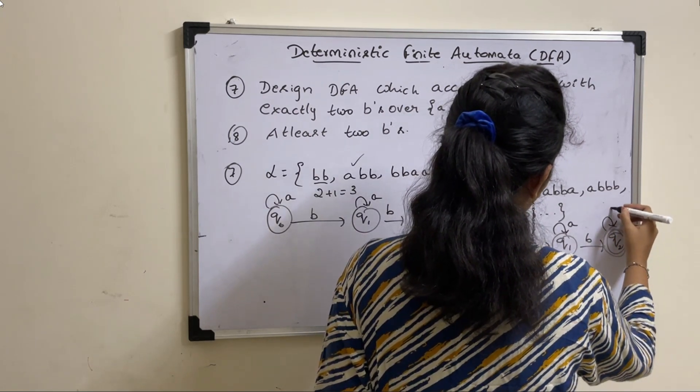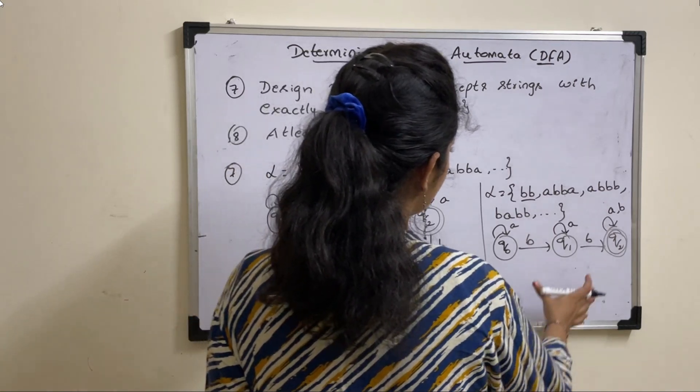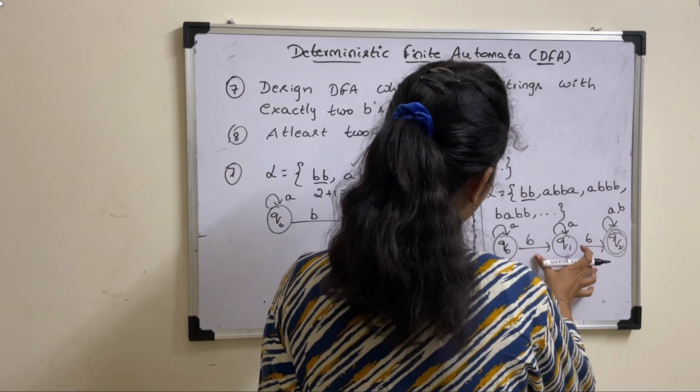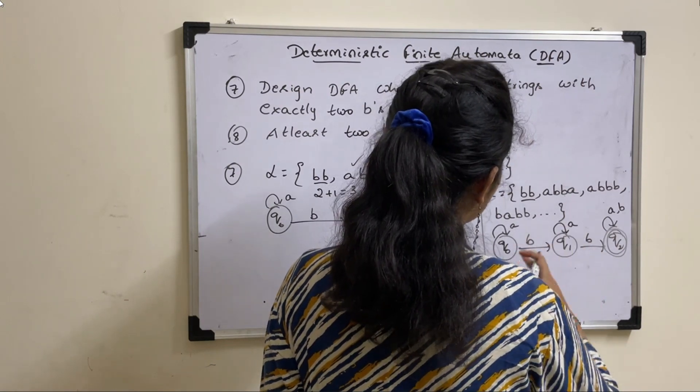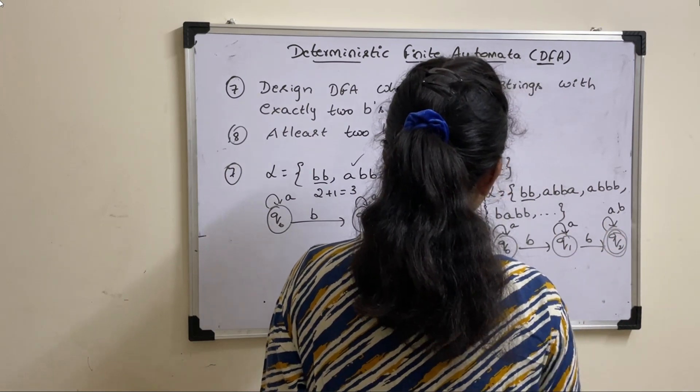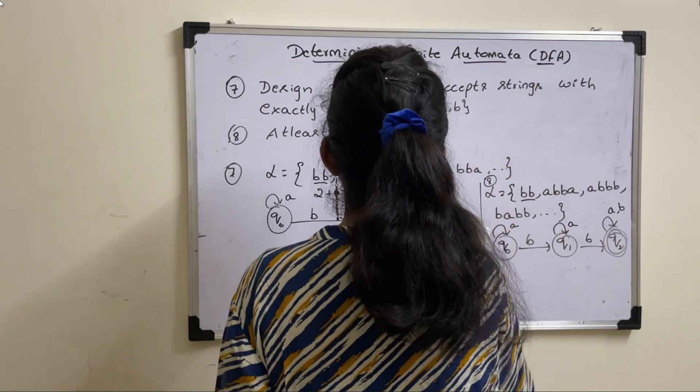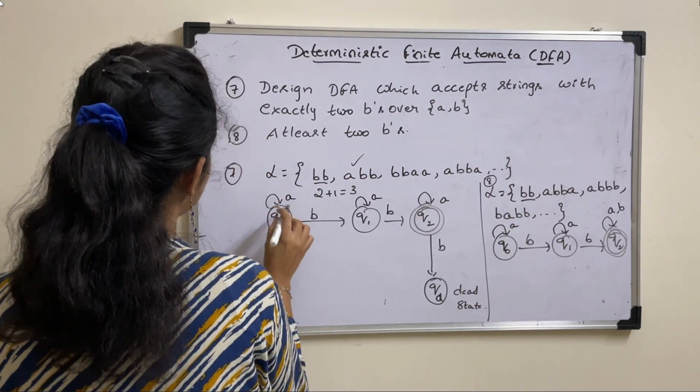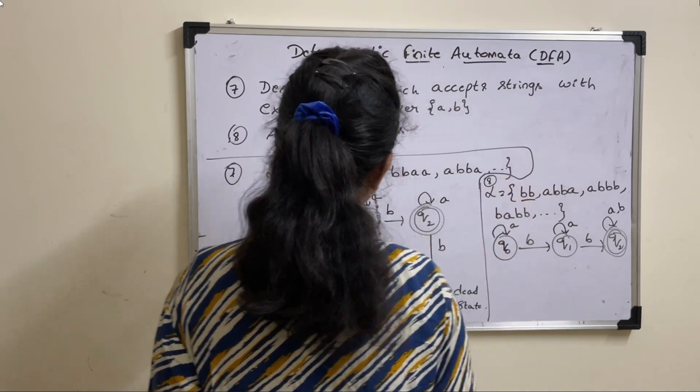Next, at the end, you can have any number of A's and B's. So there is no restriction on B's here. They should be at least two B's. Below two B's are not allowed. You can have more than two B's. So this is the automata to design for at least two B's.